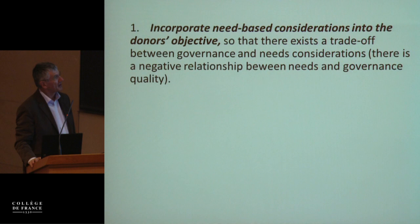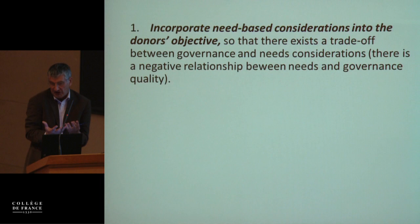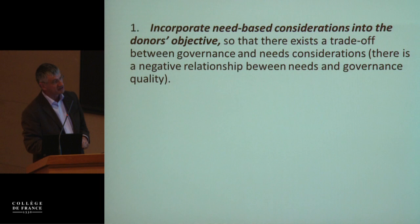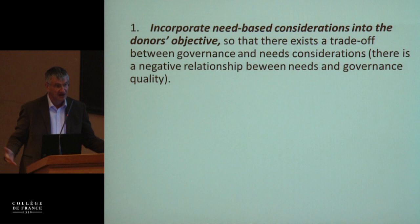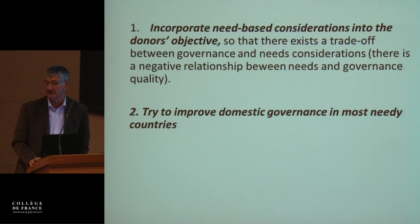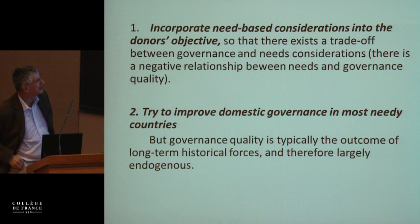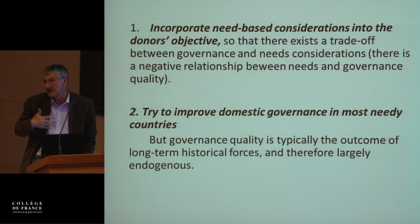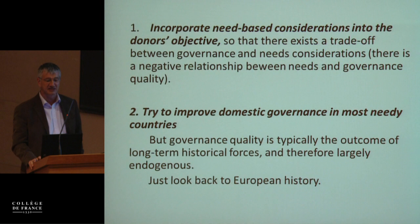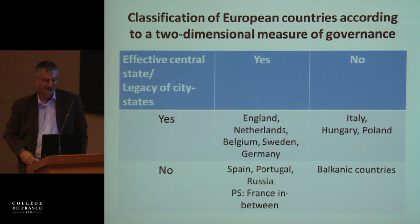So there are good reasons to try. François and I would say two things. First, incorporate need-based considerations into the donor's objective, so that the donor has a trade-off between governance considerations and need considerations — since unfortunately the countries most in need are also the worst governed. Second, try to improve domestic governance in the most needy countries. But one could say governance quality is typically the outcome of long-term historical forces, and therefore largely exogenous — you cannot change it from outside. Just look back at European history, which is what the table illustrates.